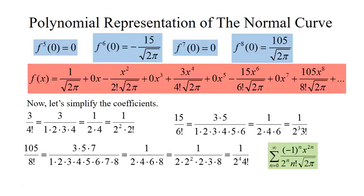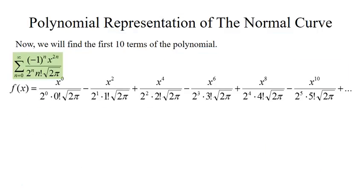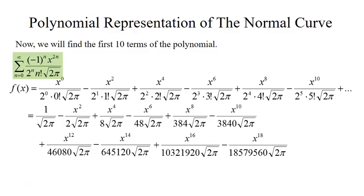And of course you have the square root of 2 pi in the denominator. This allows us to find more terms without having to take additional derivatives. I have a few terms written out here, and expanding it a bit I have 10 terms, found by plugging into the summation formula.